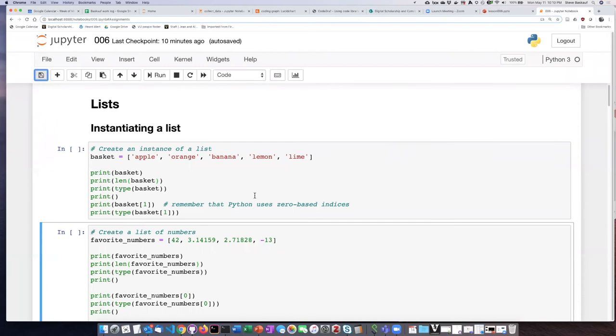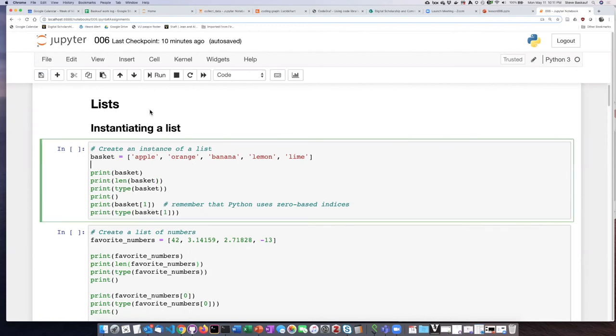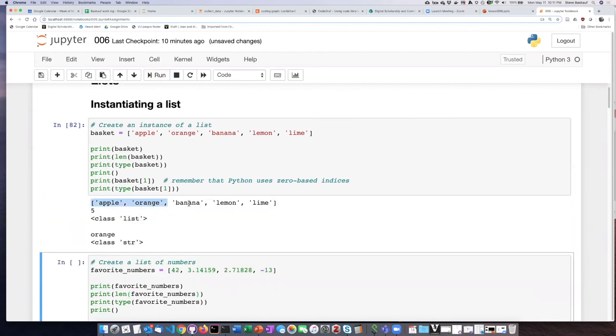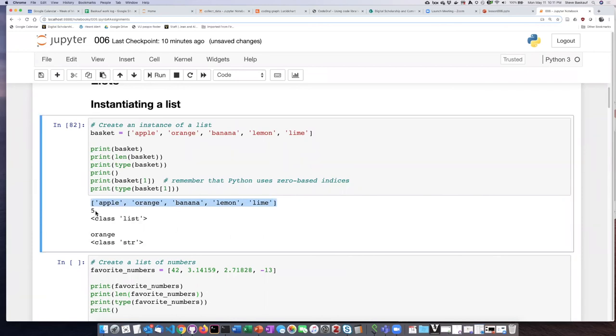Let's go ahead and take a look at a couple examples. So here I have created the list that we saw on the slides and I've asked it to print the list, the length of the list, and the type of the list, and then also print one of the items on the list and what type of thing it is. So if we run the script, here is the list itself. The length of the list is 5. The type of the list is a member of the class 'list.' And if I ask it to print just a single item on the list, it tells me that the kind of thing that that item is, is a string.